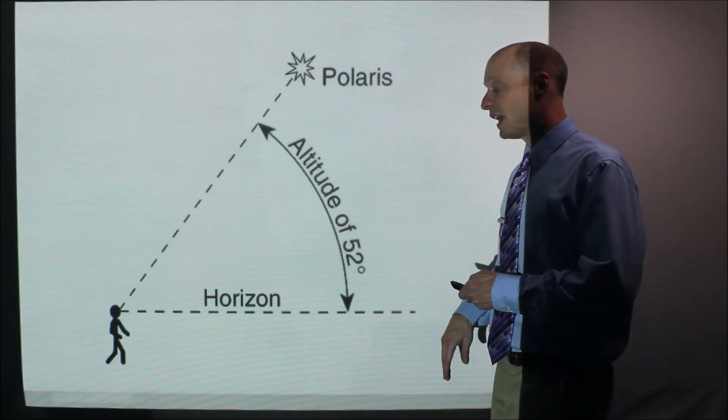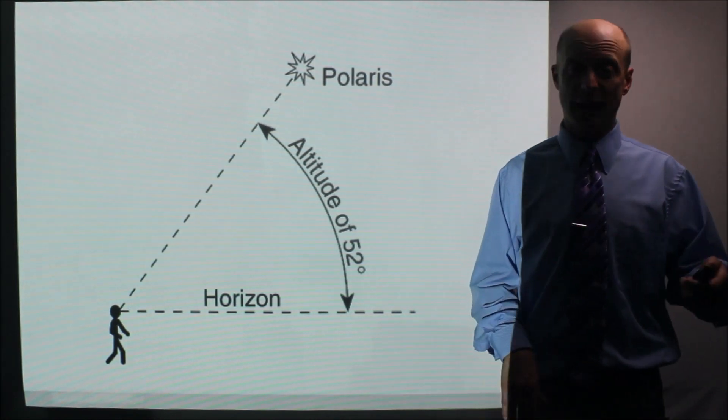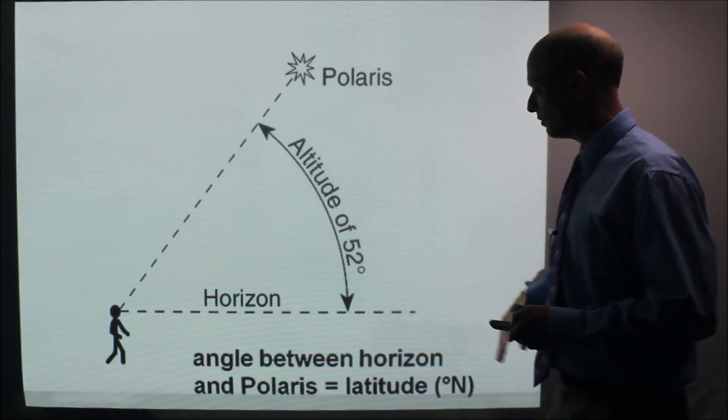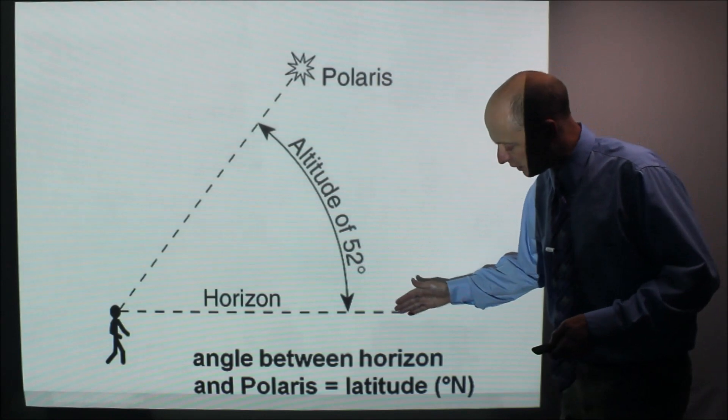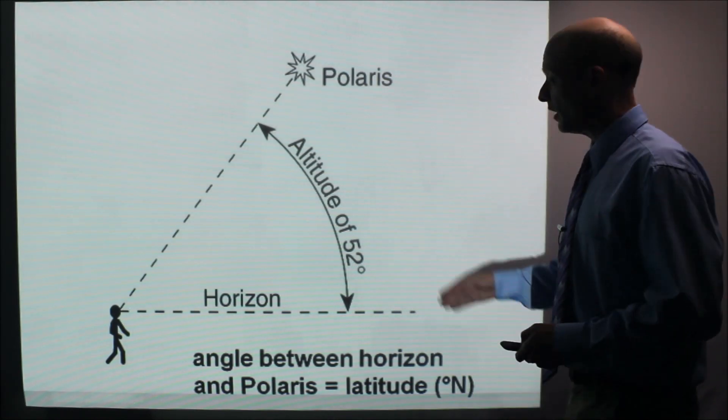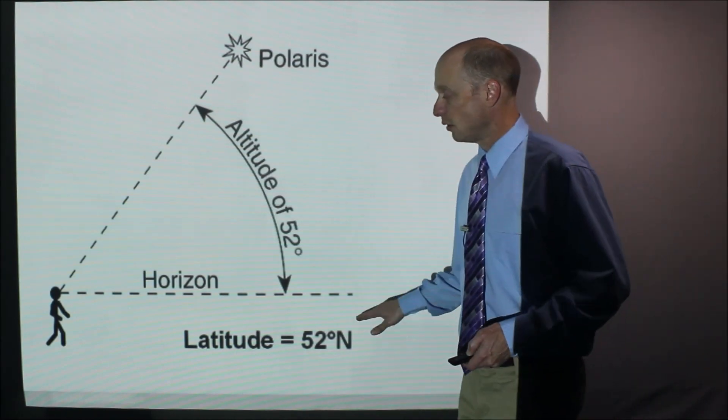Now, how can you find your latitude from Polaris? Well, if you measure the angle from the horizon to Polaris, in this case it's 52 degrees, the angle, that angle is equal to your latitude in degrees north of the equator. So therefore, this person's latitude is 52 degrees north.